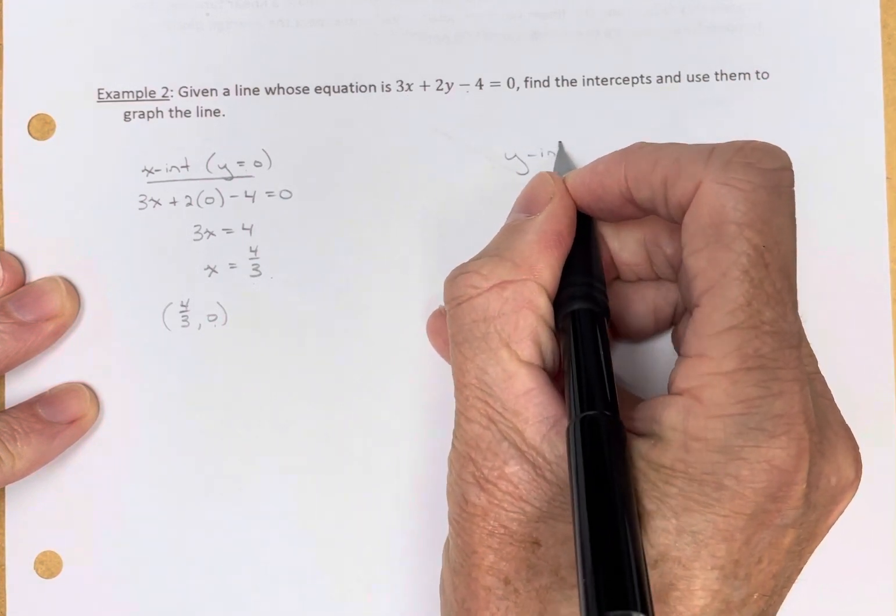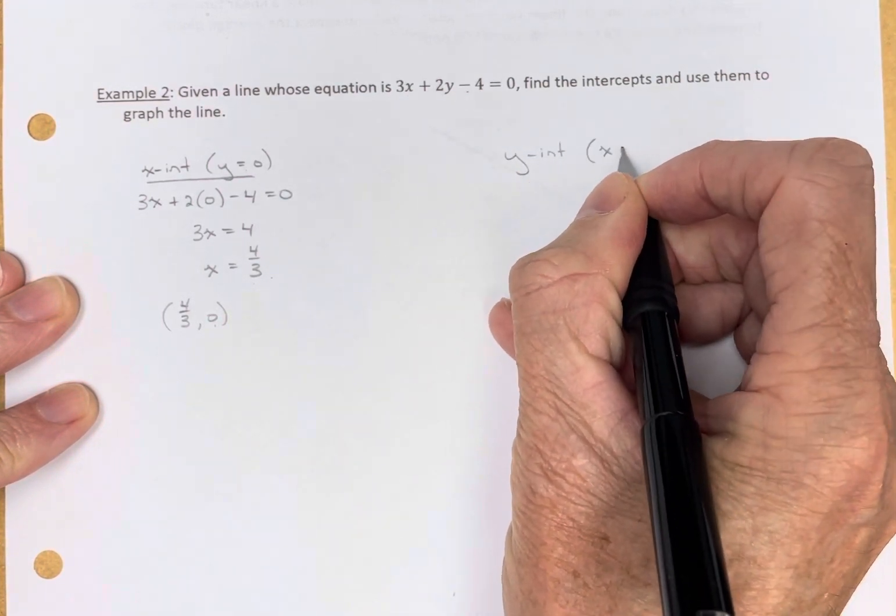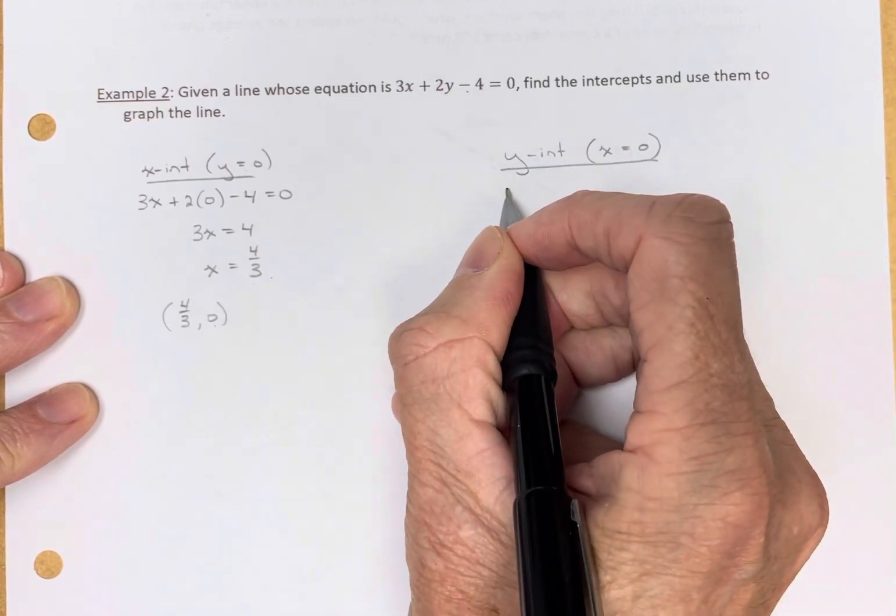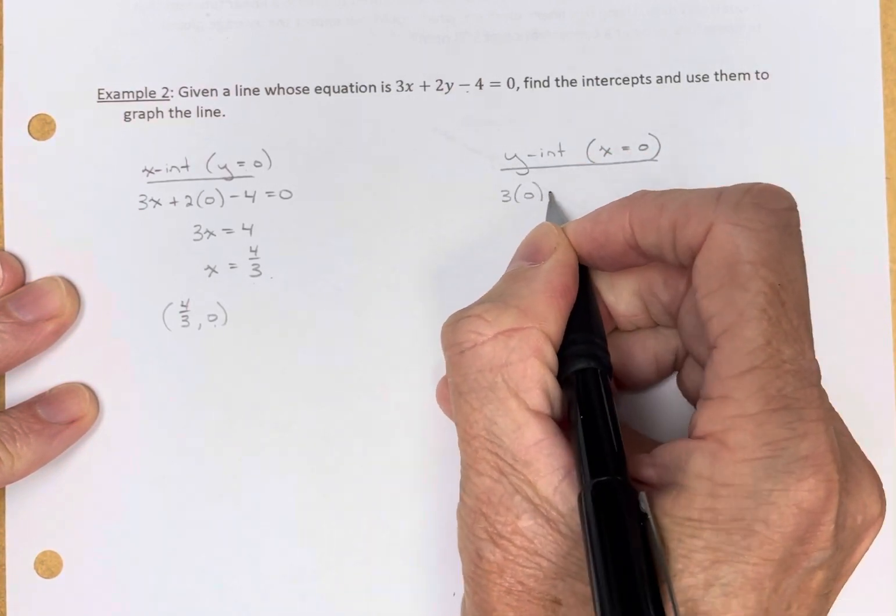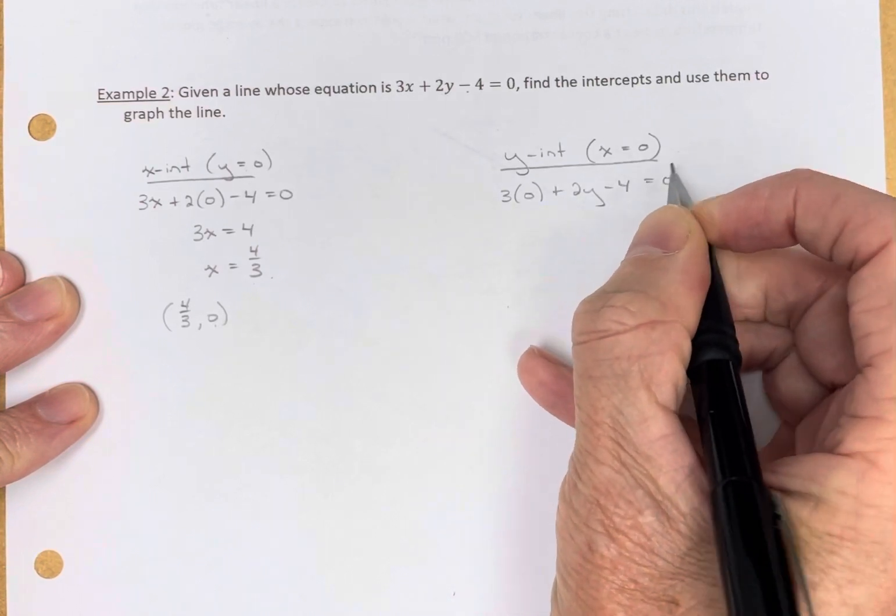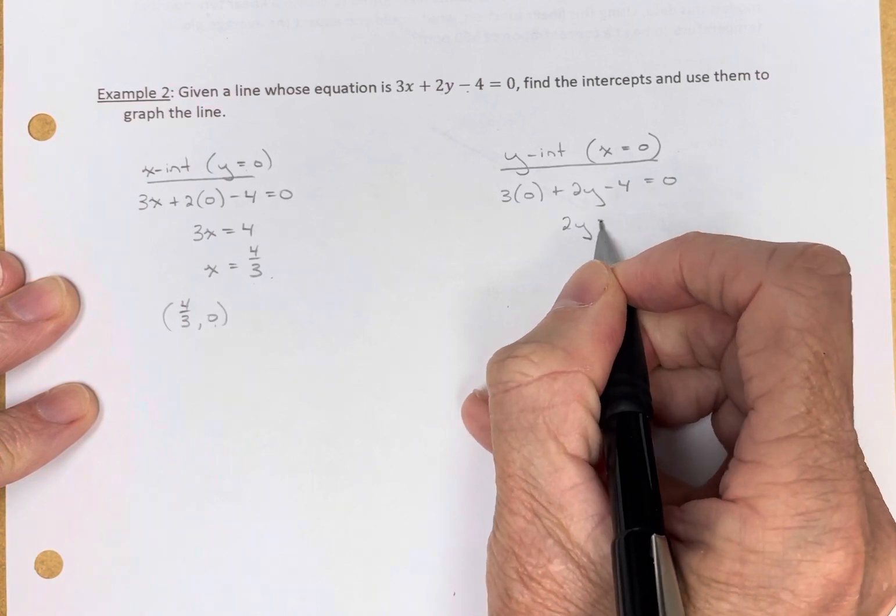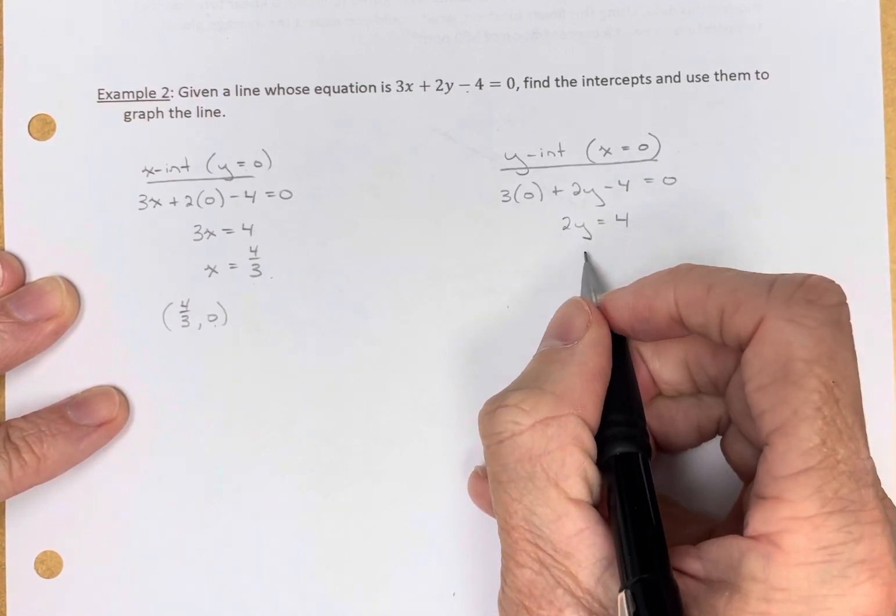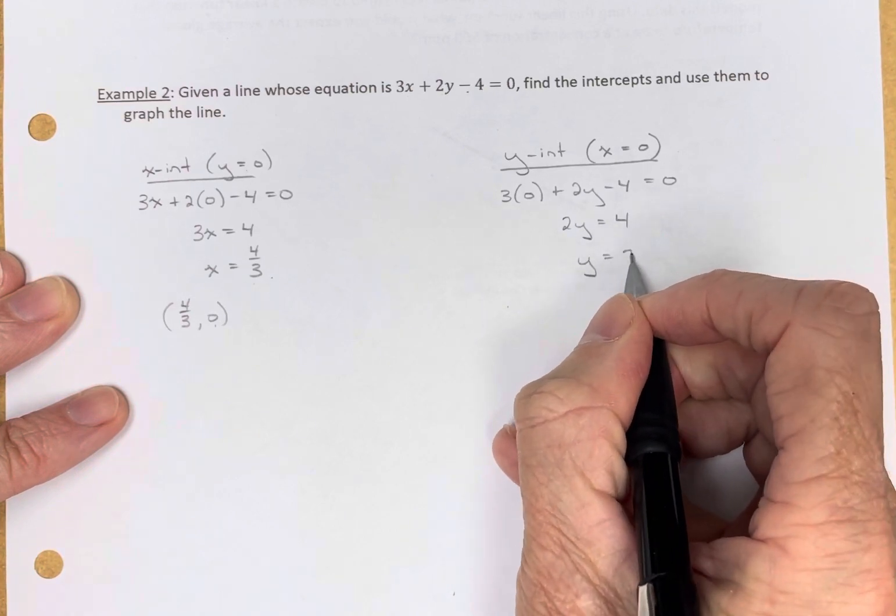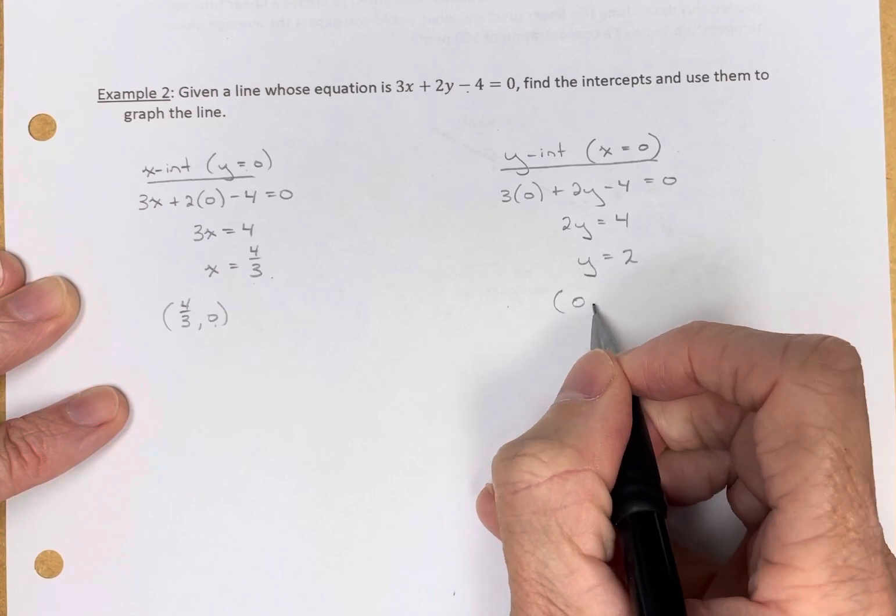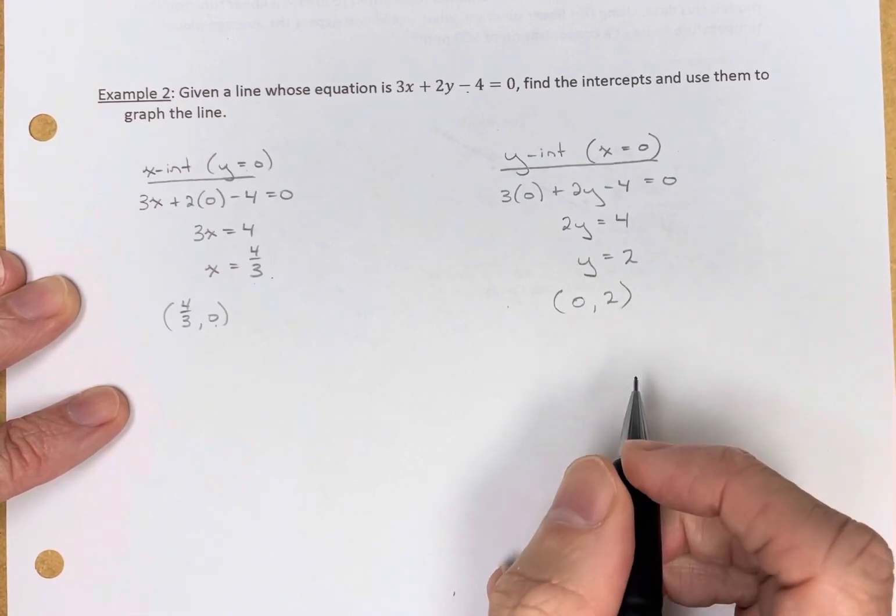Now let's do our y-intercept. In this case, we know a y-intercept is found when x equals 0, so we're going to put 0 in for x. So this is 2y equals 4. And of course, divide both sides by 2. y equals 2. So my y-intercept is the point 0, 2.